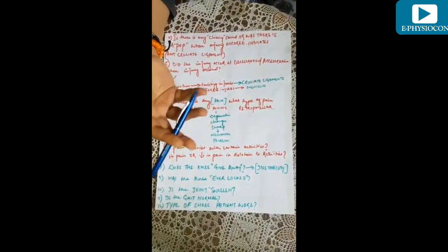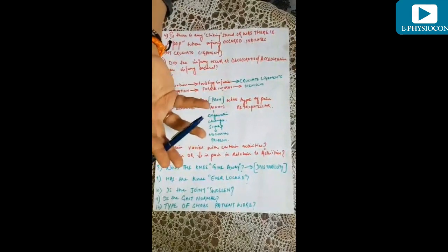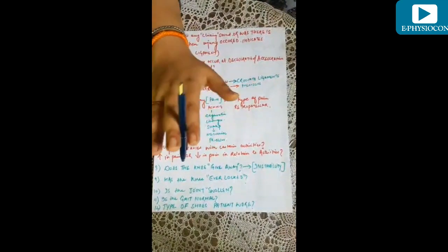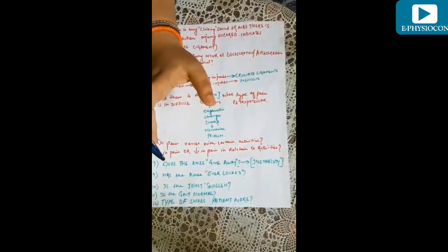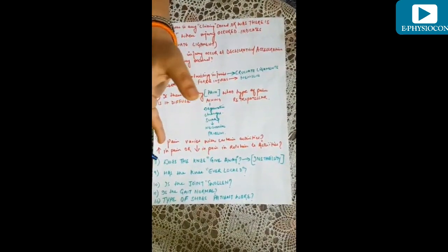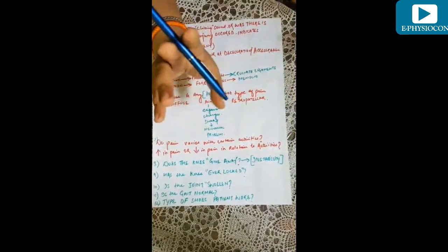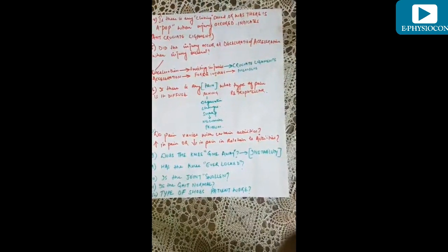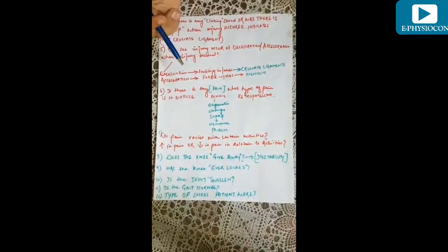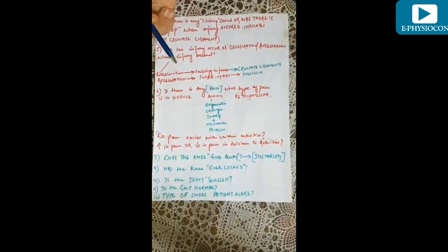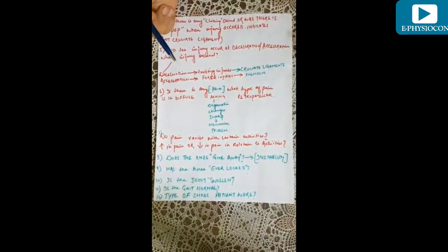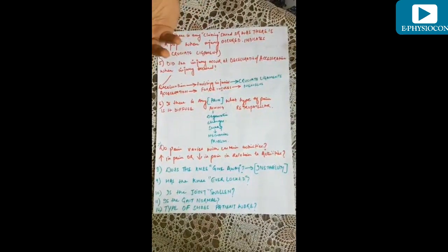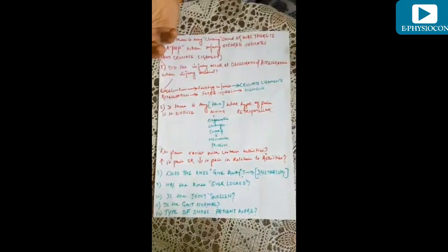Recurrent swelling caused by climbing or descending slopes or stairs may be related to patellofemoral dysfunction. Often there is no swelling in the knee after severe injury because fluid extravasates into the soft tissue surrounding the joint. Swelling is an alarm from the body that something is wrong and should be diagnosed.